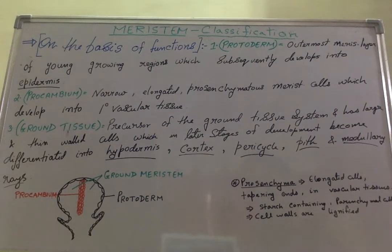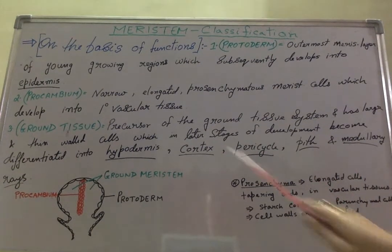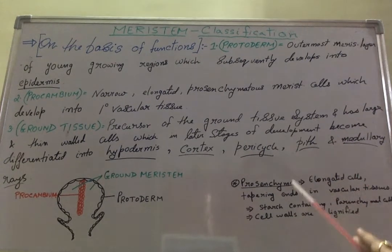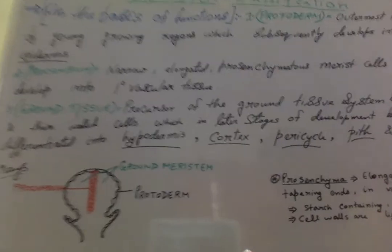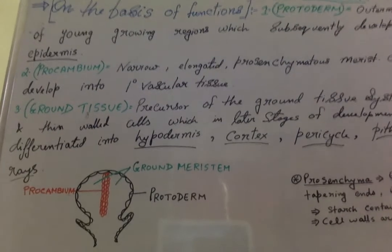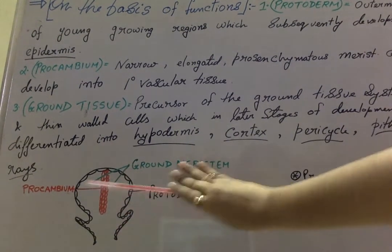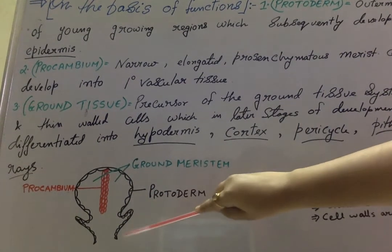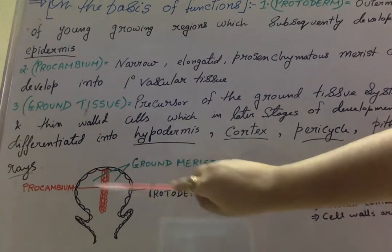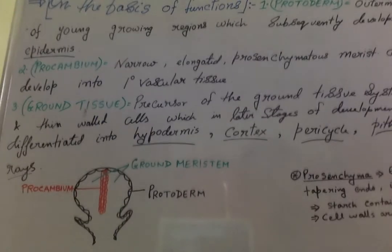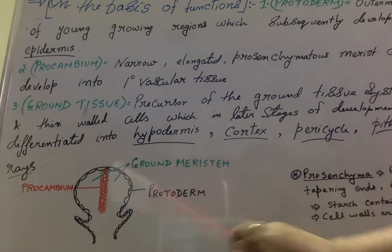These are some very important points regarding plant anatomy or plant tissue, and in subsequent videos these will become very clear. Just remember and memorize these points. If you see this part of the plant body here, the cells lining the boundary of this plant section form the protoderm, and this protoderm will later develop into epidermis, which is the outermost layer of the plant body.